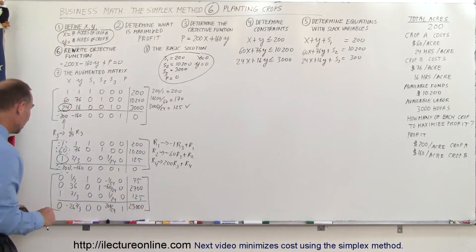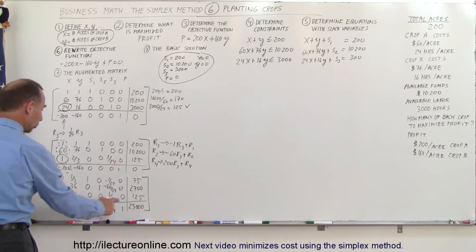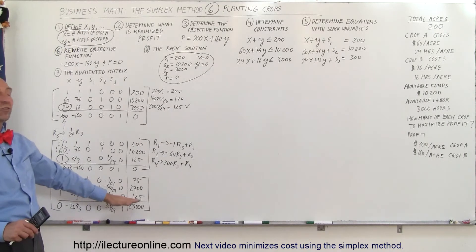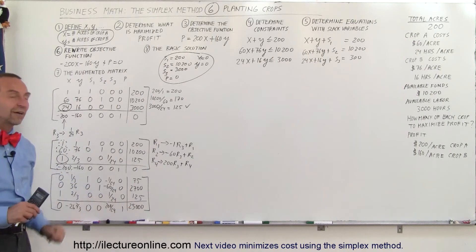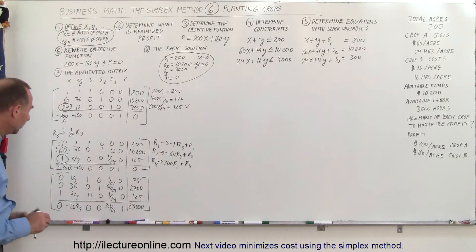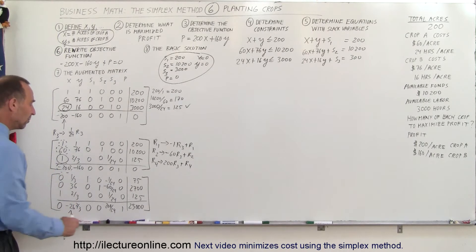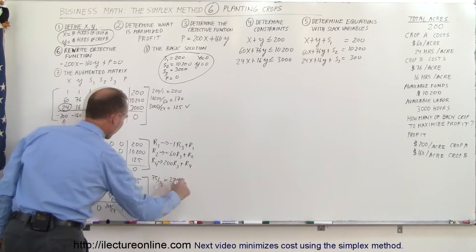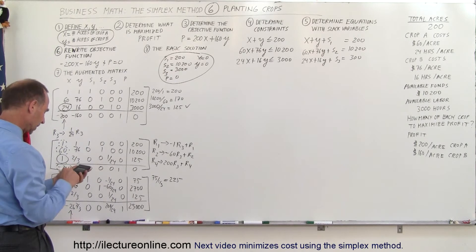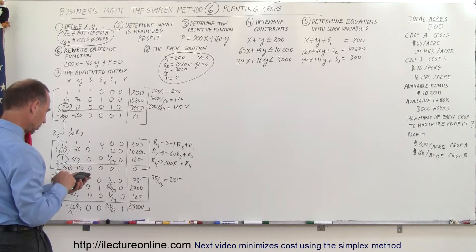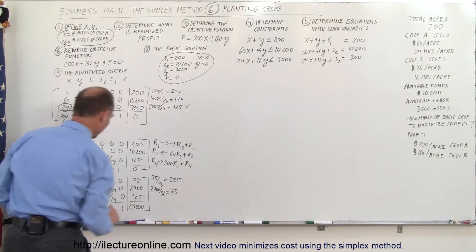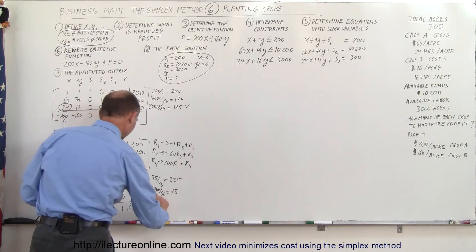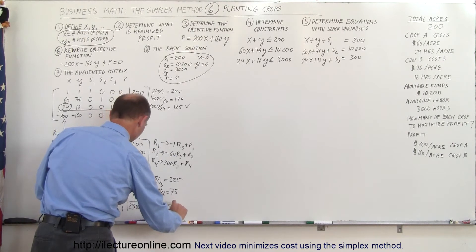We have an intermediate solution now. Notice the x column shows x equals 125, giving a profit of $25,000. So if we grow 125 acres of crop A and 0 acres of crop B, we make $25,000 — but maybe we can do better. We still have a negative number in the bottom row, so we find the next pivot point by dividing the right-hand side values by the y-column entries: 75 divided by 1/3 is 225; 2,700 divided by 36 is 75; and 125 divided by 2/3 is 187.5. The lowest ratio is 75.